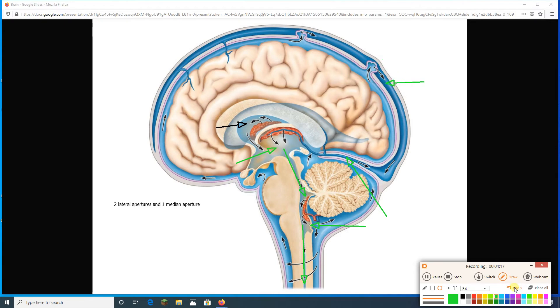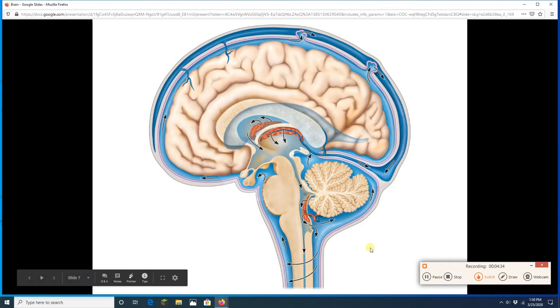Anyway, I'm going to make a square. There's the arachnoid villus right there. And that is where the CSF returns to the bloodstream. All right. Awesome. Let's keep going.